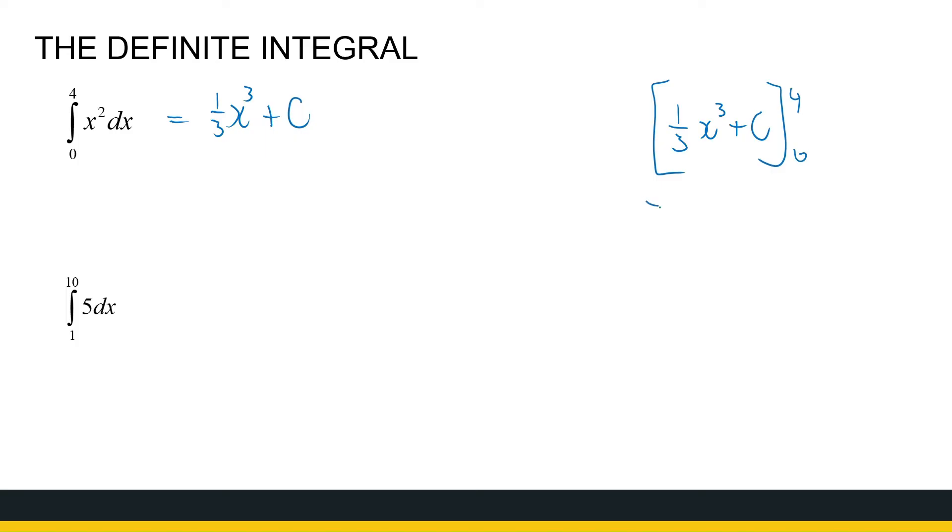If I look at a third x cubed plus c between 4 and 0, this is our notation for substituting it in. That means it's a third, the x is 4, 4 to the power 3 plus c minus the third 0 to the power 3 plus c. So what I've got is 64 over 3 plus c minus 0 minus c. These c's cancel each other out every time. So that is why we can use any antiderivative. So whatever constant you put there, they're going to cancel each other out when I do the subtraction.